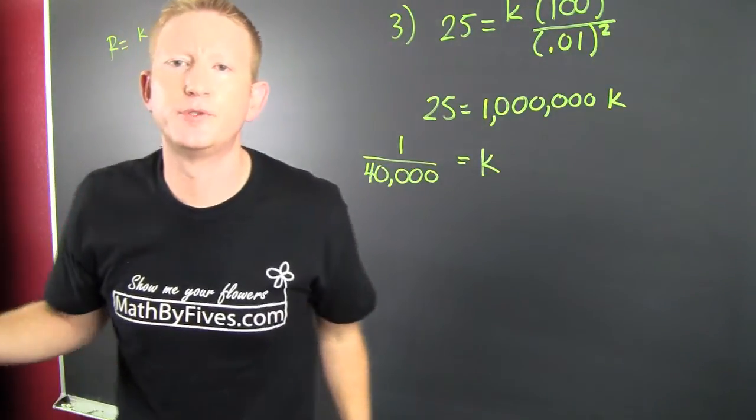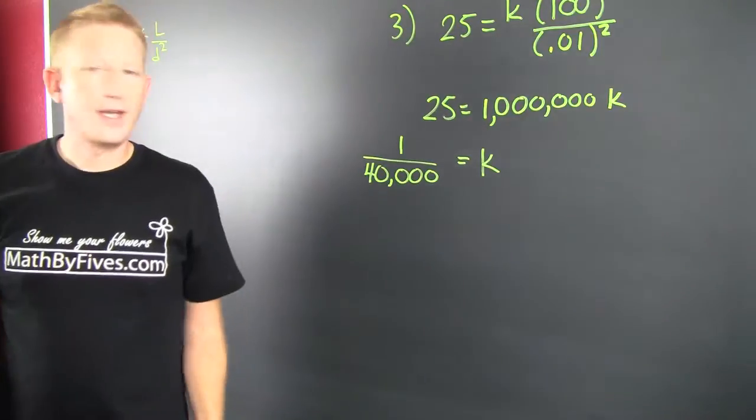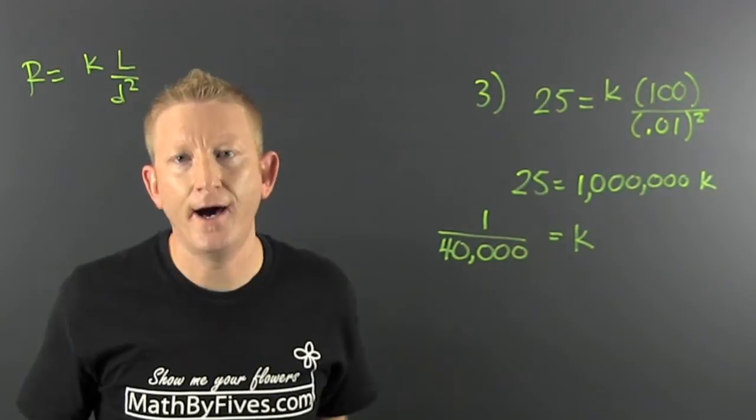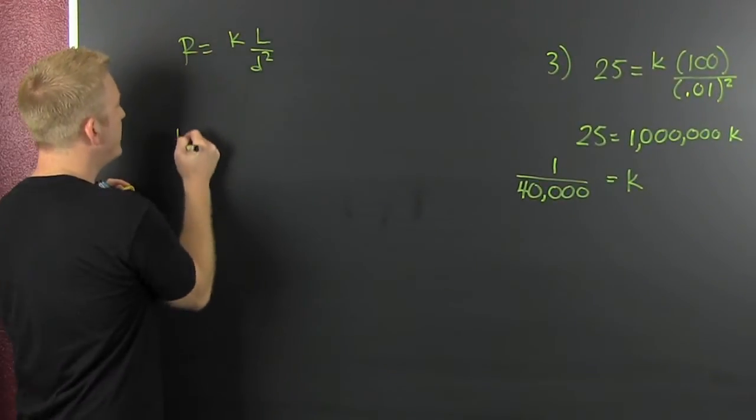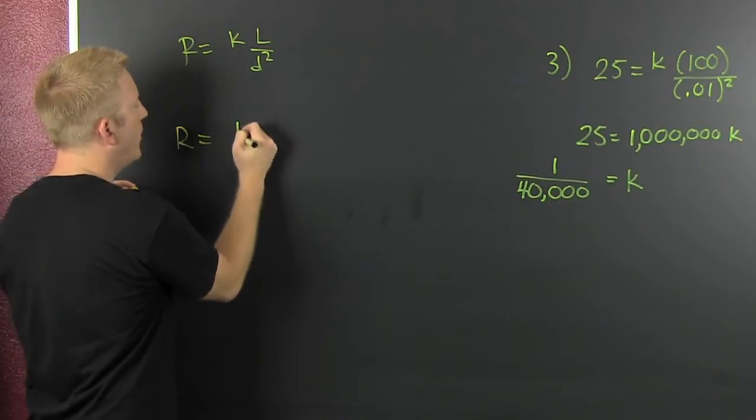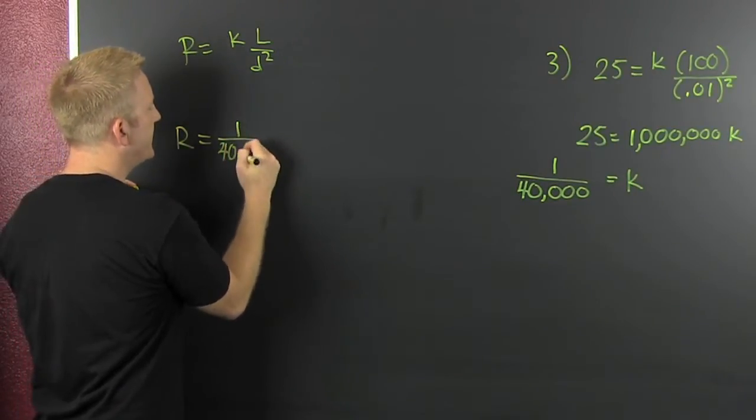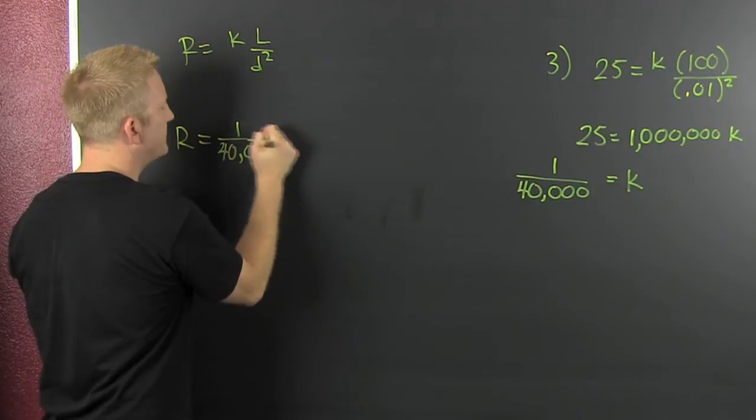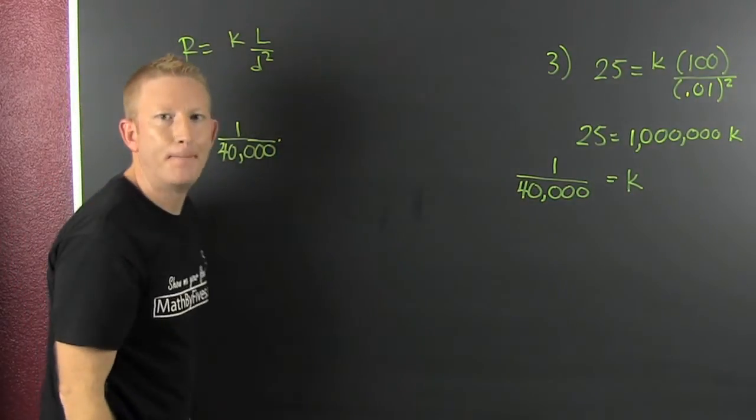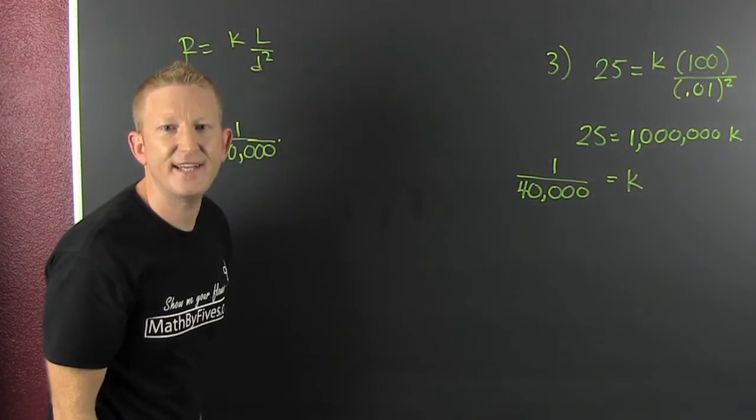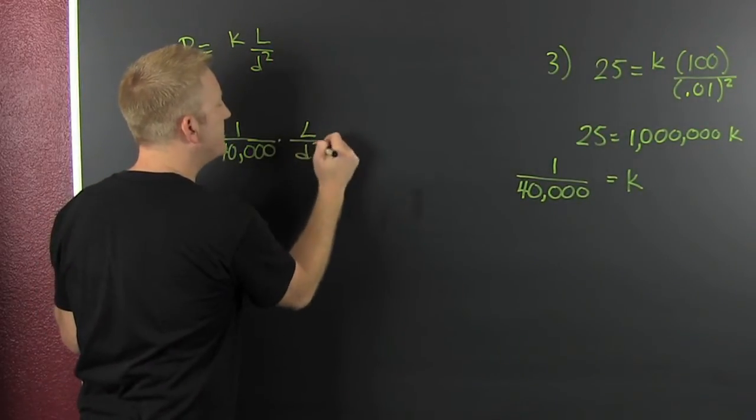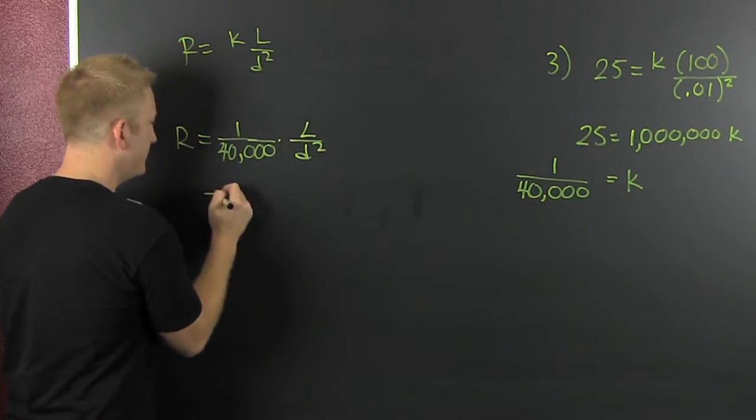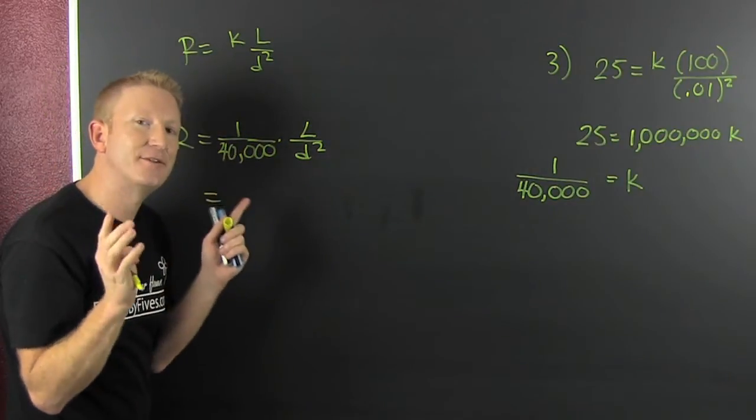You finish! Just kidding! I'll finish! So, now that I've found my K, I can put that there. My resistance is equal to 1/40 thousandths. Big numbers! That's the stuff they don't like! Then this is your L divided by your D squared. Now we can answer the question.